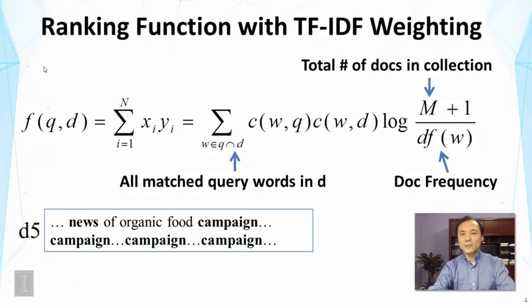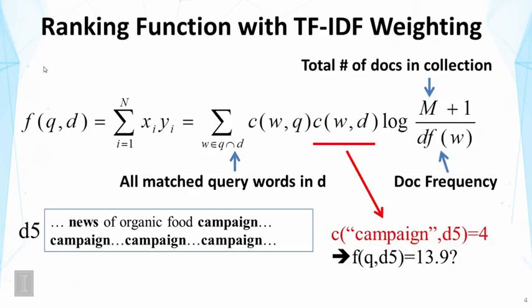If you look at this document again, now it's not hard to realize that the reason why it has received a high score is because it has a very high count of campaign. So the count of campaign in this document is 4, which is much higher than the other documents, and has contributed to the high score of this document.